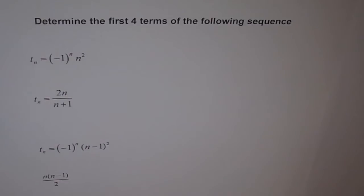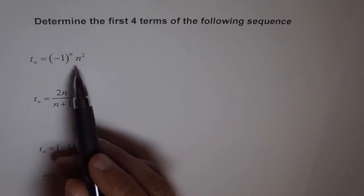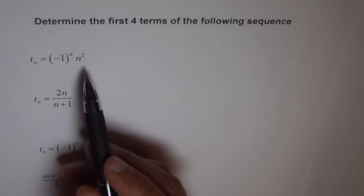So, n starting from 1, okay? When we say first four terms, that means n values are 1, 2, 3 and 4. So, we can calculate like general formula is given to us for question number 1.